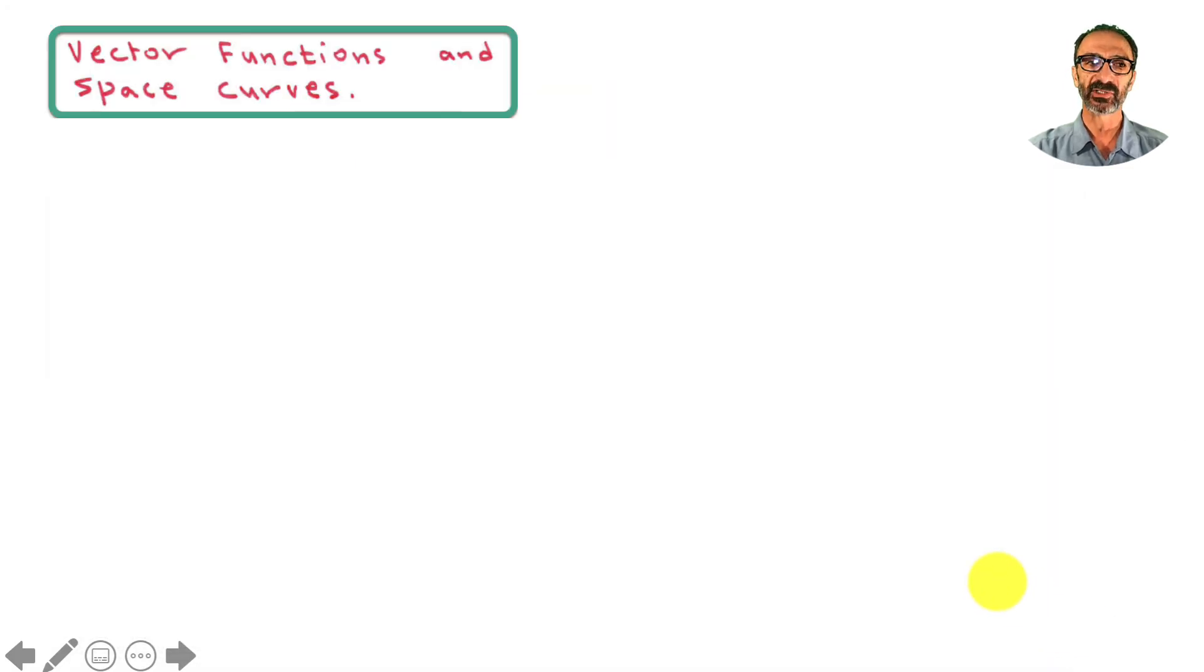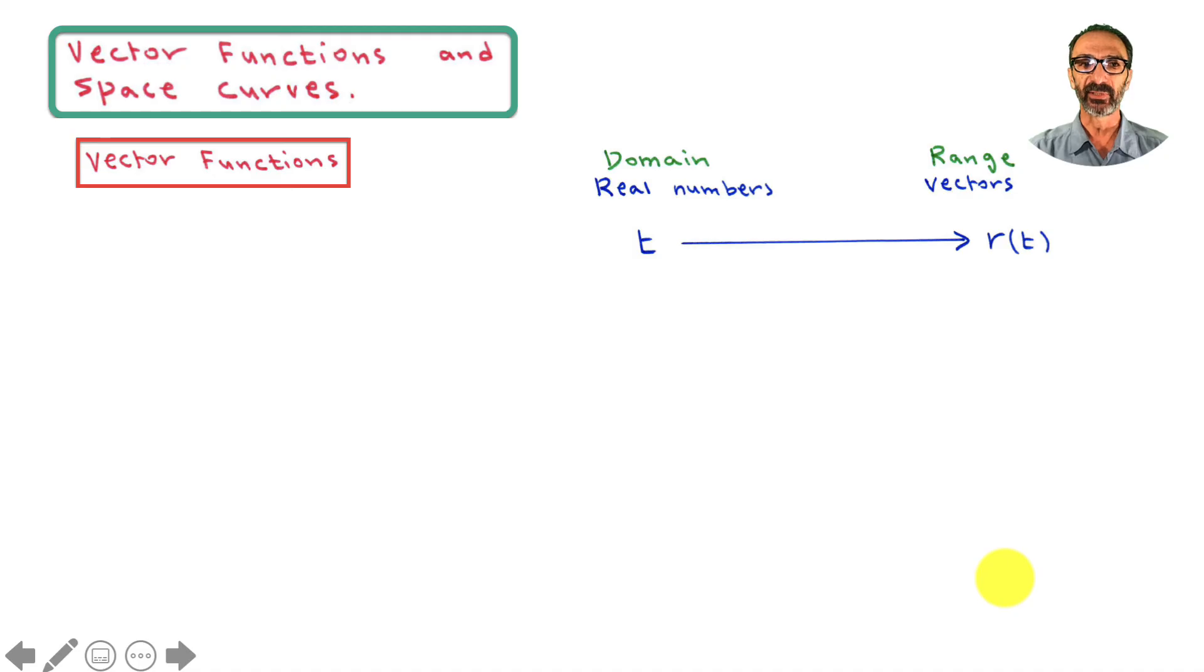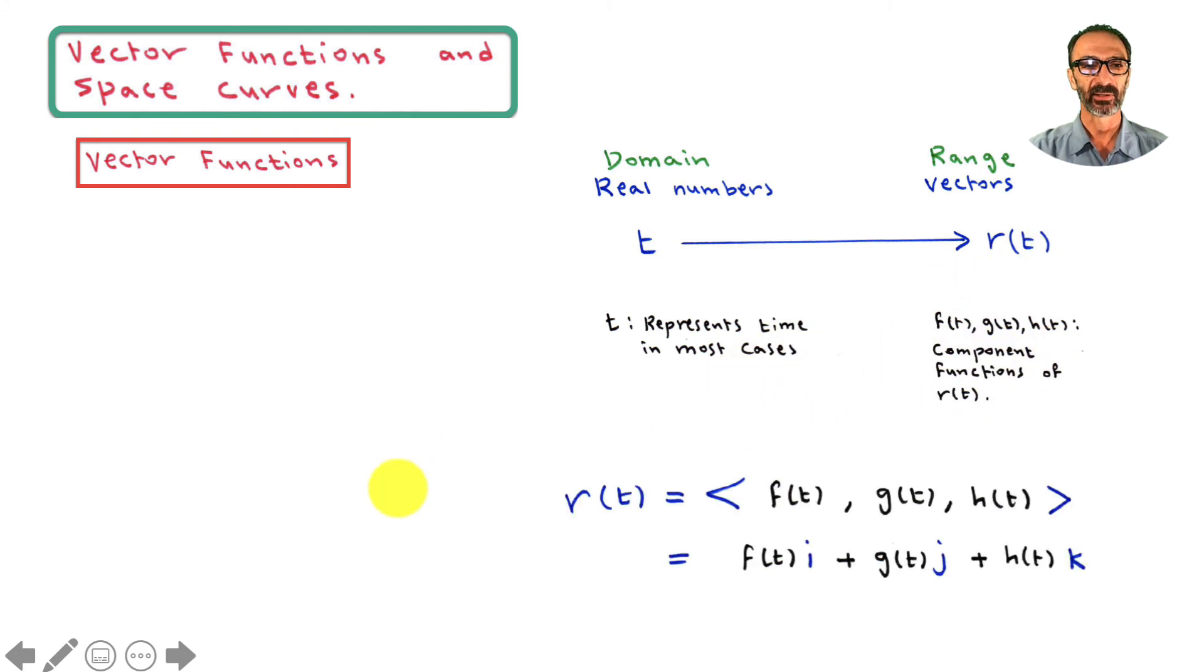Vector functions and space curves. Let's start with vector functions. The domain will be real numbers t and the range will be vectors r(t). t represents time in most cases. f(t), g(t), and h(t) are the component functions of r(t). This means that r(t) is a vector of three components: f(t), g(t), and h(t).